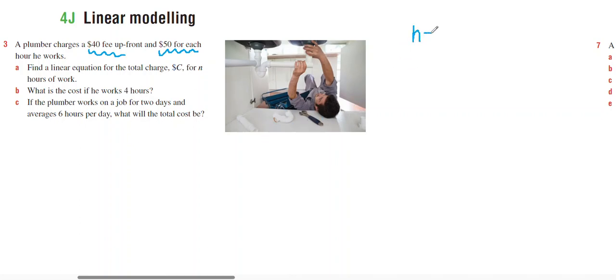So if the number of hours that they worked was zero, it's going to be $40 plus nothing. If the number of hours that they worked is one, it's going to be $40 plus one times $50, $50 to give you $90.